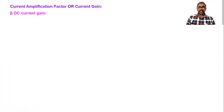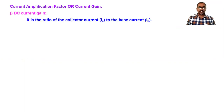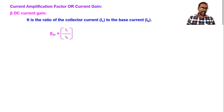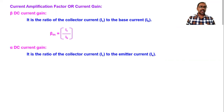Let me define beta first. Beta is the ratio of collector current to base current in a transistor. You know that a transistor has three terminals: emitter, base, and collector. The ratio of collector current to base current is beta, so the formula is β = Ic / Ib.